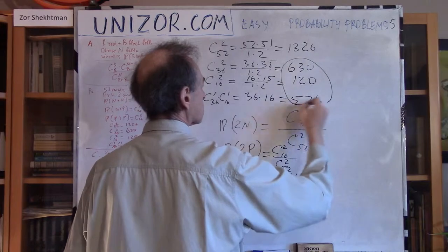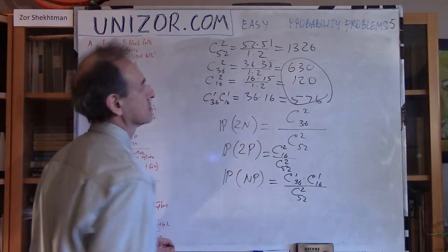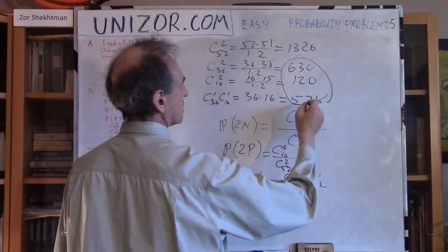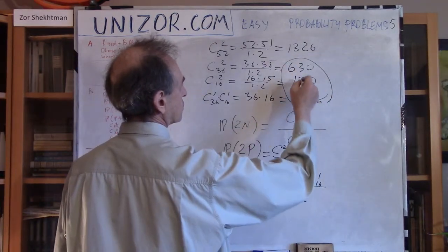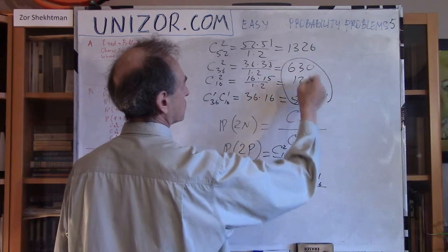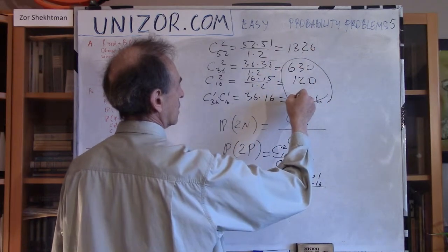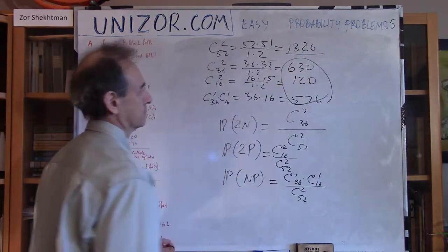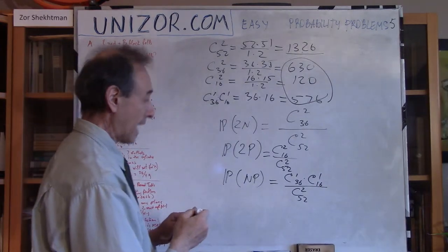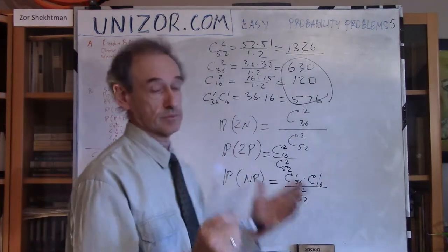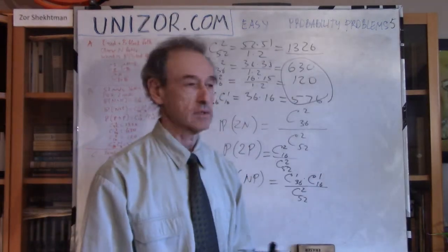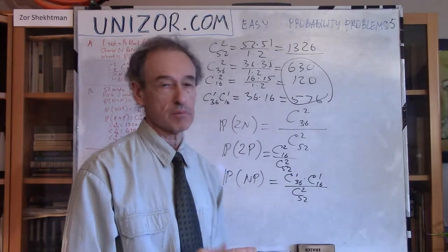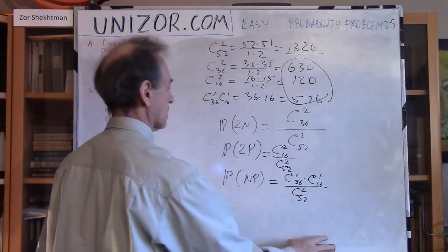Adding the three numerators: 630 plus 120 plus 576 equals 1326. This matches our denominator C(52,2), so the balance checks out and gives me assurance that my calculations are correct.